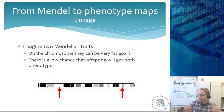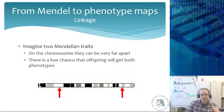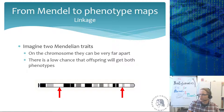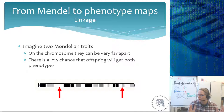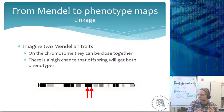If two Mendelian traits are on the same chromosome and very far apart, there's a high chance of recombination between them, so the distance will be close to 50% — but less than 50%, because 50% means the genes are on different chromosomes. A value like 37% means the genes are relatively far apart. If genes are very close together on the chromosome, there is a high chance that offspring will get both phenotypes, so the percentage of recombinants will be smaller.